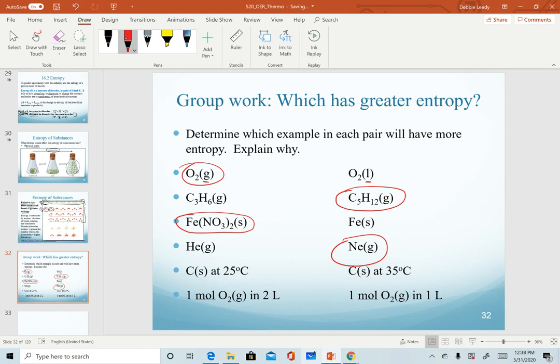For our next example, we are looking at solid carbon. The difference here is we are changing temperatures. For this one, we predict carbon at a higher temperature to have a little bit more entropy. Again, the value between those wouldn't be very different, but a little bit higher for the higher temperature.